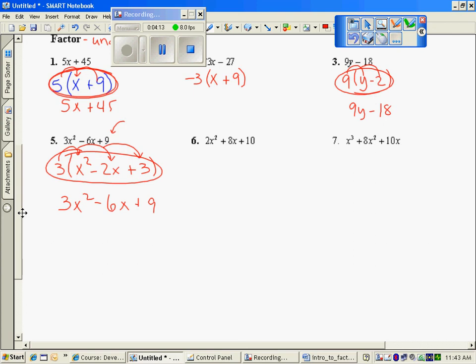So in the second one, number 6, which is the second trinomial, tri means 3, they share a common factor of 2. 2 times x squared is 2x squared. 2 times 4x is 8x. And 2 times 5 is 10.